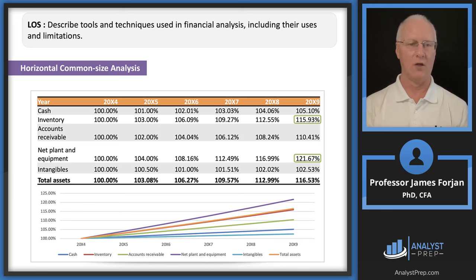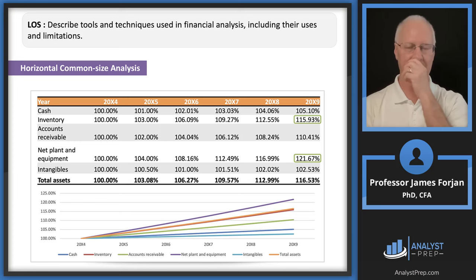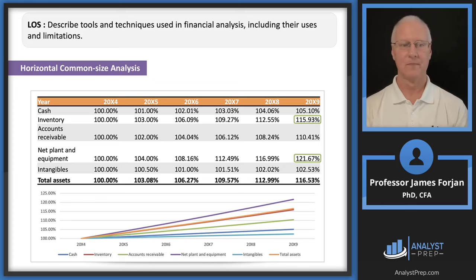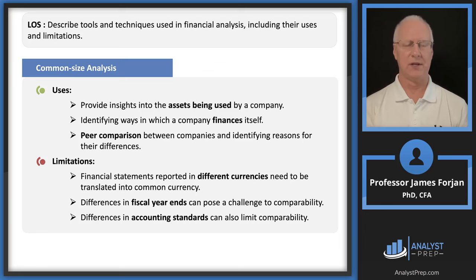Horizontal common size analysis goes across. You start with the base year at 100% and convert subsequent years into percentages. If accounts grow, percentages will be above 100%; if they fall, below 100%. I particularly like horizontal common size because you can see the growth rate in each account — for example, cash increased by 5.1% over six years while net plant and equipment increased by 121%. This is probably a really good exam question because it explicitly shows the growth rate in each account.